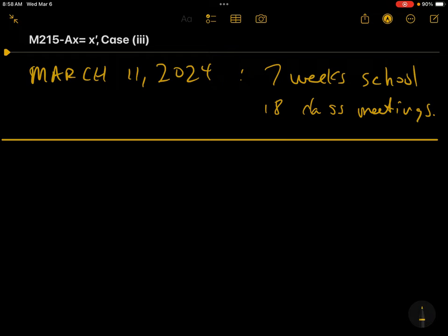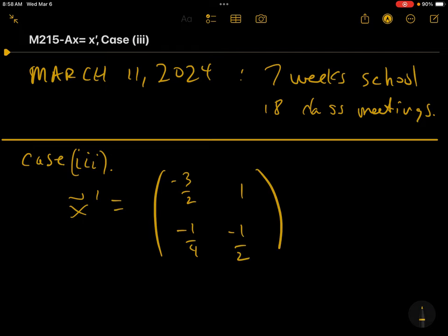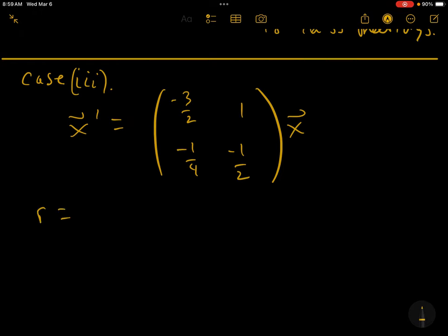We are still working on this AX equals X prime 2 by 2 system. We've done case 1 and case 2, which are real and imaginary. And now we've got case 3 here. Let's just look at a system here, pluck this out of your book. It's got some fractions, no big deal. The eigenvalues here are minus 1 and minus 1.